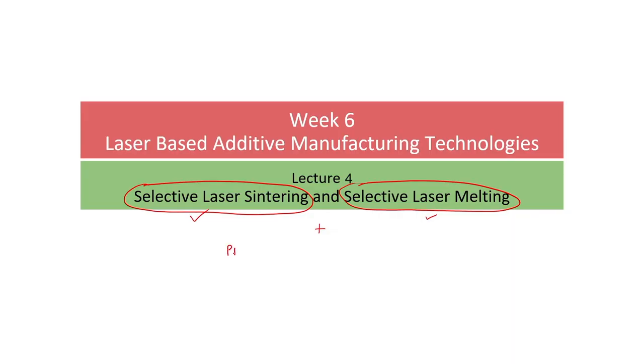Hello everyone. Welcome to the last lecture on laser-based additive manufacturing techniques. This week we have already studied the fundamentals of additive manufacturing as well as the stereolithography process. In this lecture we will be studying the process parameters involved in laser-based additive manufacturing and their influences: laser parameters, performance parameters, and the influence of process parameters on performance parameters. Let us now see what are the various process parameters important in SLS and the stereolithography process.